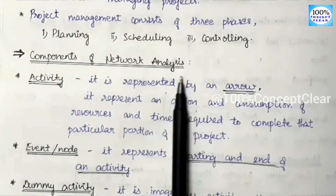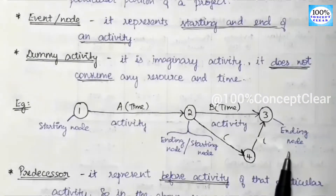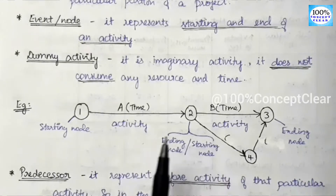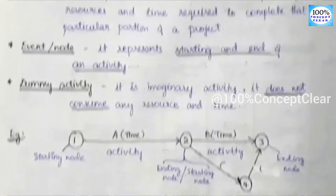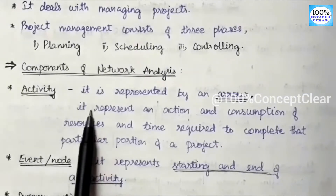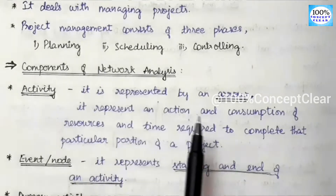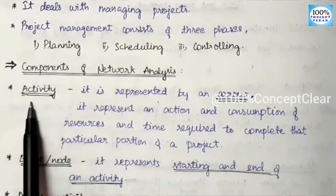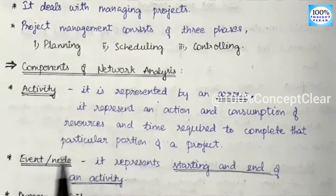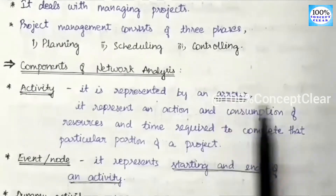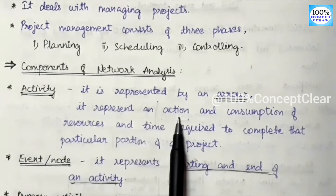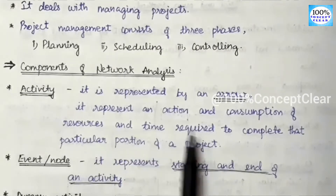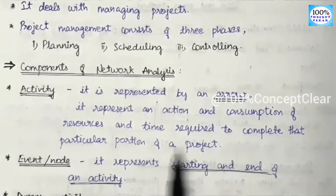In the network analyzers, the first component is the activity. In a network diagram, we order all the activities. We need to see what activities are there and schedule them. In this diagram, we represent the activity using an arrow mark.